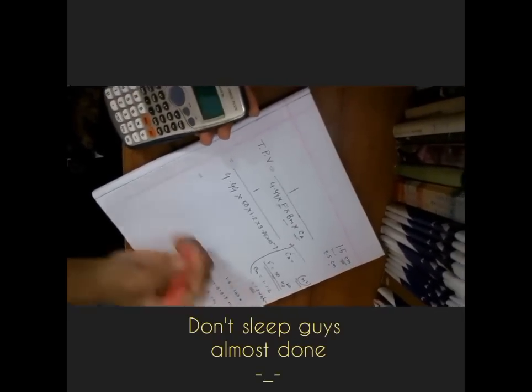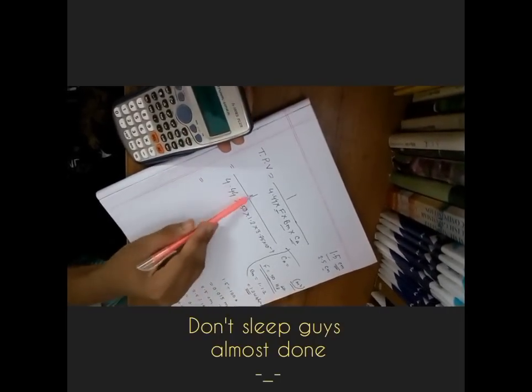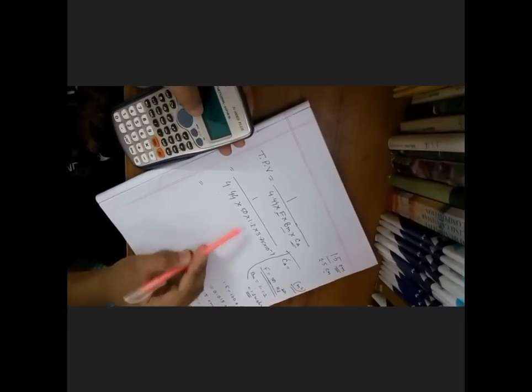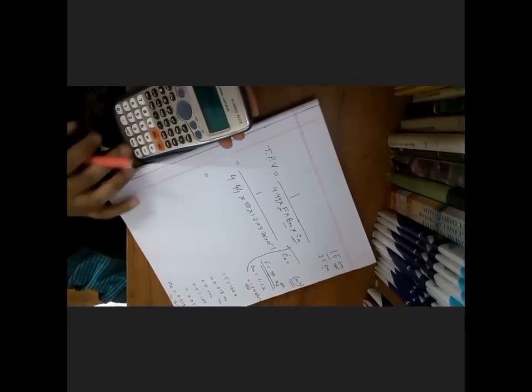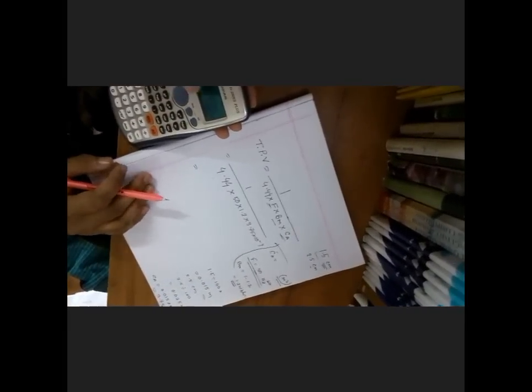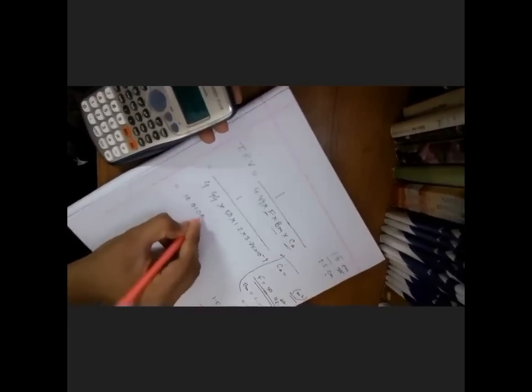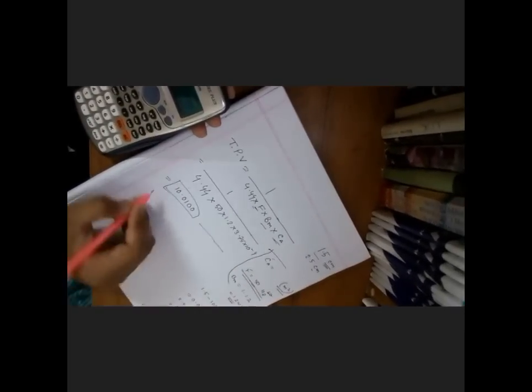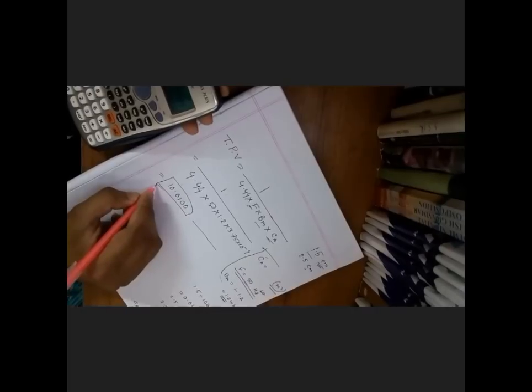So guys, I have given inputs in my calculator: 1 by 4.4, 0.15 to 1.2 into core area. Then it's approximately 10.0100 blah blah blah something. So it's turns per volt. It means that for one volt we have to turn about 10 turns to this bobbin for one volt.